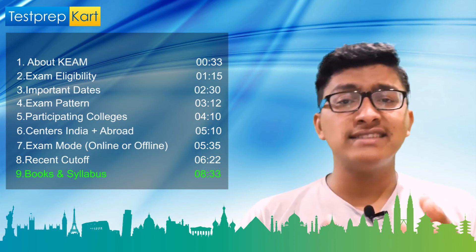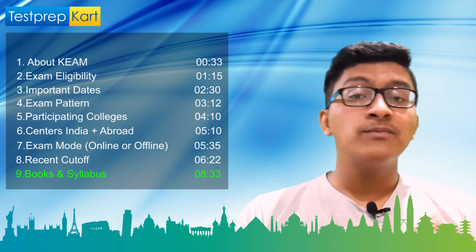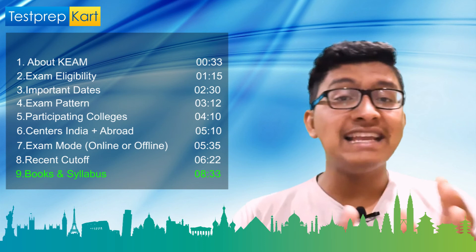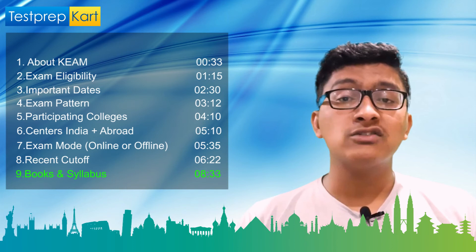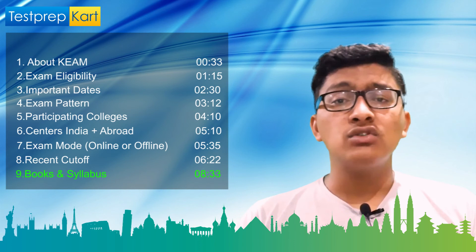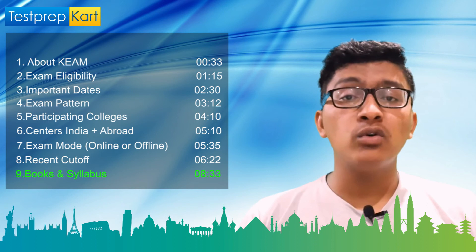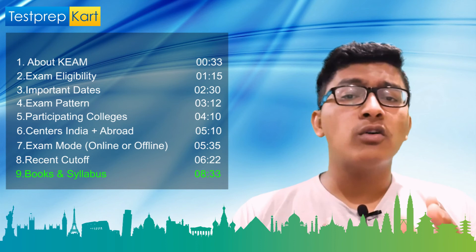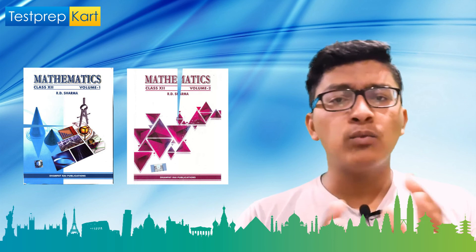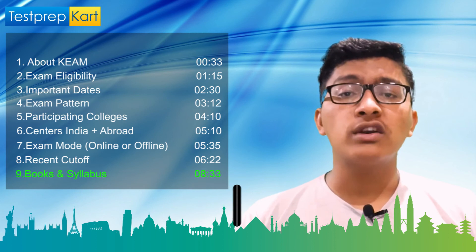For Chemistry, for organic and inorganic chemistry, use the book by O.P. Tandon. It is a very good book for KEAM preparation, and NCERT is especially important for the chemistry section. For Mathematics, R.D. Sharma — both volumes — is undoubtedly a very good book for KEAM. Also go through NCERT for mathematics.